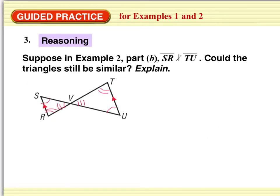Okay, you try number three. Suppose in example two, which I brought the picture over, part B. Suppose that SR is not parallel to TU. Could the triangles still be similar? So we're supposing that these are not parallel. Could they still be similar? Explain.